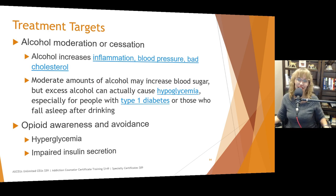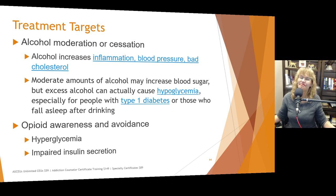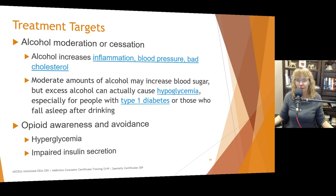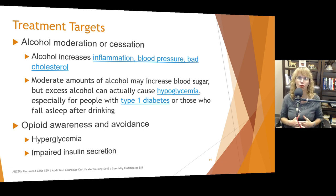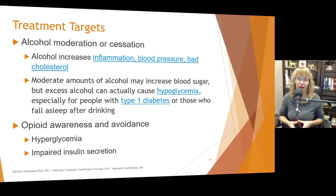Alcohol moderation or cessation is another target. Alcohol increases inflammation, blood pressure, and bad cholesterol, just like diabetes does. Moderate amounts of alcohol may increase blood sugar, but excess amounts actually cause hypoglycemia, especially for people with type 1 diabetes. If they drink a lot and fall asleep without checking their blood sugar, they can quickly become hypoglycemic. Blood sugar is really important to monitor when people drink.